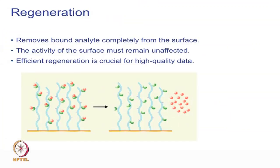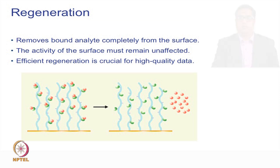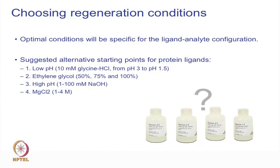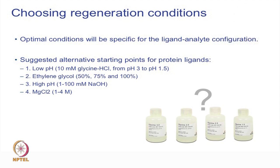Regeneration removes the bound analyte completely from the surface. The activity of the surface must remain unaffected after regeneration, and an efficient regeneration is crucial for high quality data. We need to test the regeneration surface - we can do regeneration scouting before starting an assay to identify the appropriate regeneration conditions. Common regeneration conditions include low pH, ethylene glycol, high pH, and magnesium chloride.